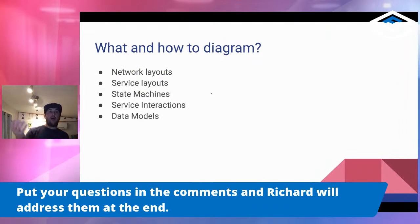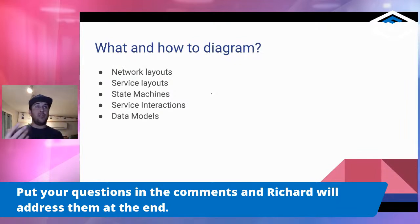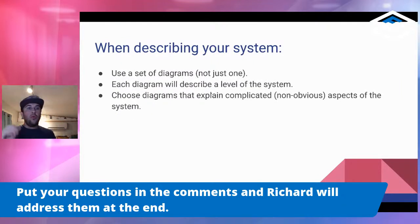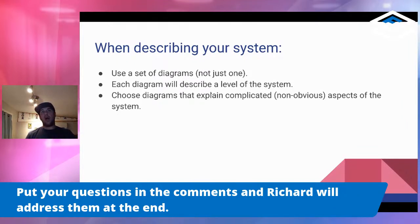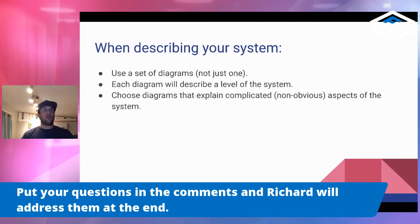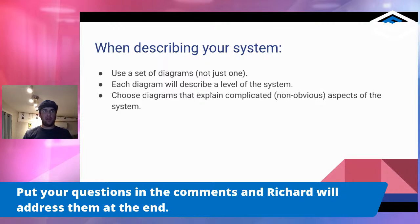How do I know what and how to diagram? We have many different types of things to diagram: networks, services, state machines, service interactions. When describing your system, you want to use a set of diagrams where each one describes a level. You're going to want to choose diagrams that explain complicated but not obvious aspects of the system. There's no point in diagramming well-understood things — you don't need to show a user's browser communicating through the Internet to your web server, or a standard three-tier architecture. Focus your diagramming effort on the non-obvious aspects.